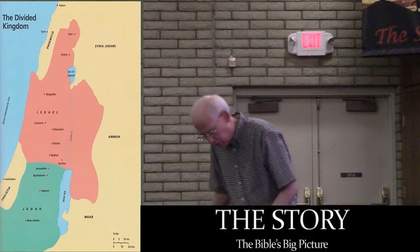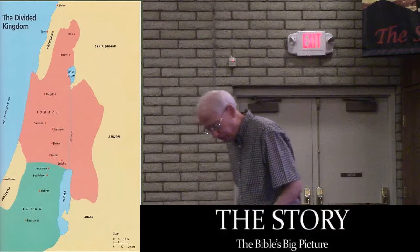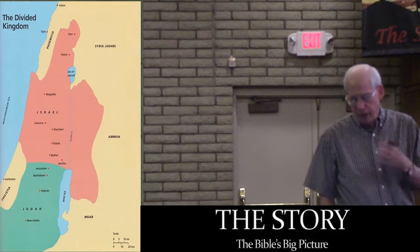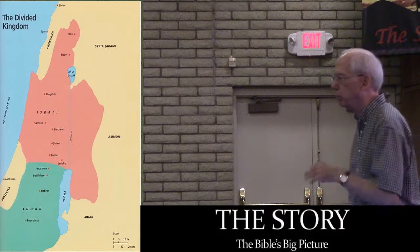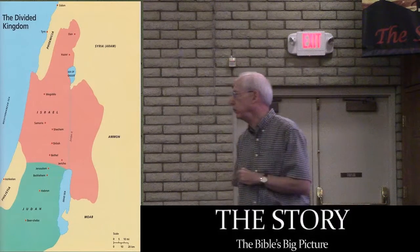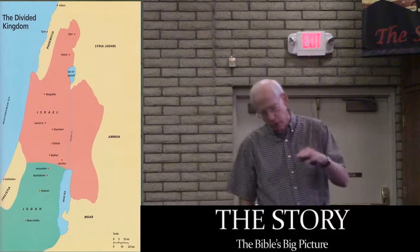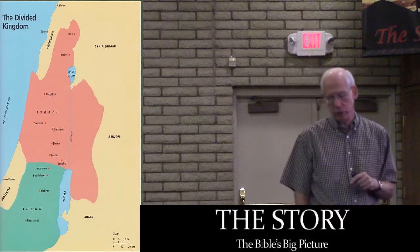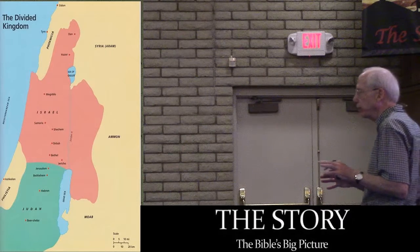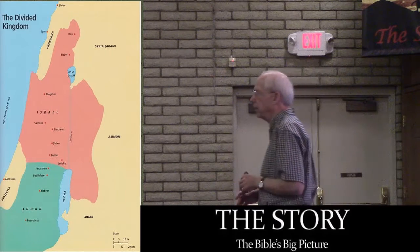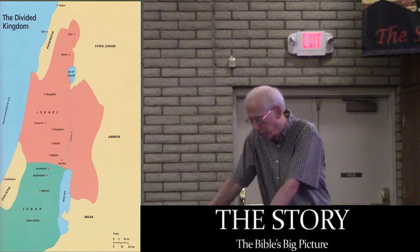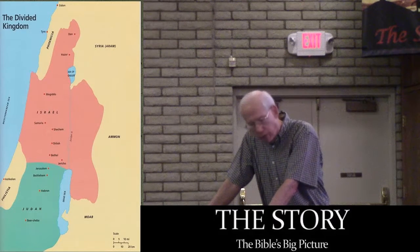The northern kingdom continued to exist until it was vanquished by the Assyrians, the final blow coming with the capture of Samaria in 722 or 721 BC. The southern kingdom of Judah was captured by the Babylonians, and the final blow came with the fall of Jerusalem in 587 or 586 BC.